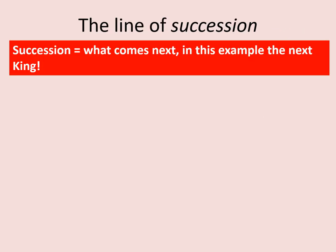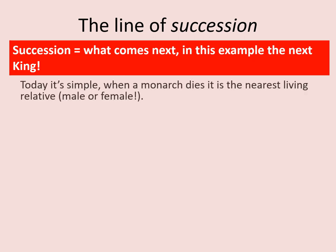The line of succession — succession in this case usually means what comes next, and in this example, who's going to be the next king? Today it's fairly simple: when the monarch dies, it's the next living relative, male or female, who takes over.